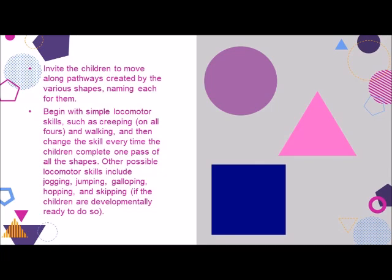Begin with simple locomotor skills such as creeping on all fours and walking, and then change the skill every time the children complete one pass of all the shapes. Other possible locomotor skills include jogging, jumping, galloping, hopping, and skipping, if the children are developmentally ready to do so.